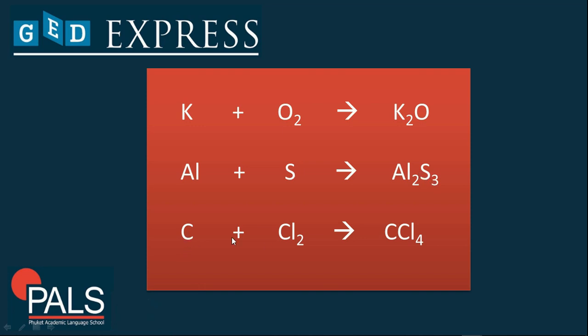And next, we have carbon and chlorine, which yields carbon tetrachloride. We have here one carbon and four chlorine. You can pause the video for a while and answer it on your end, on a separate sheet.